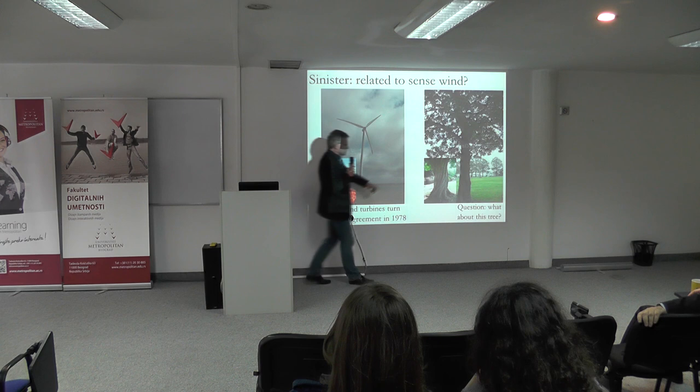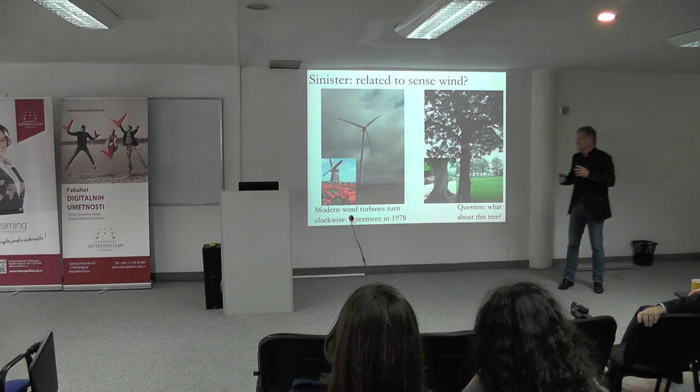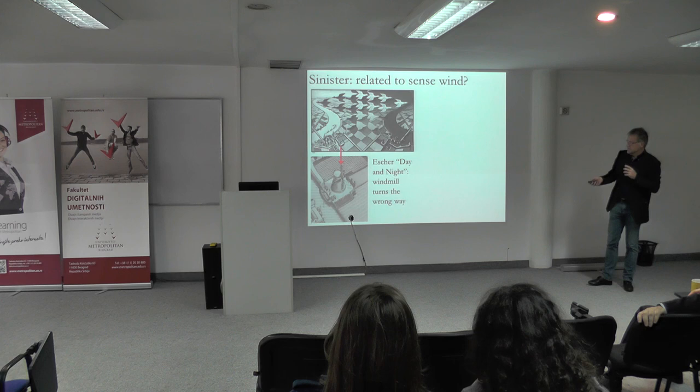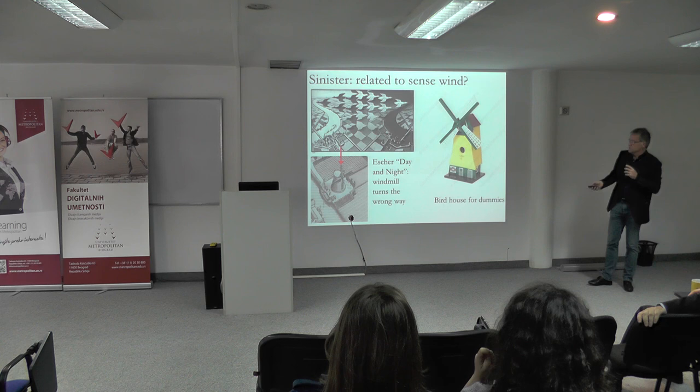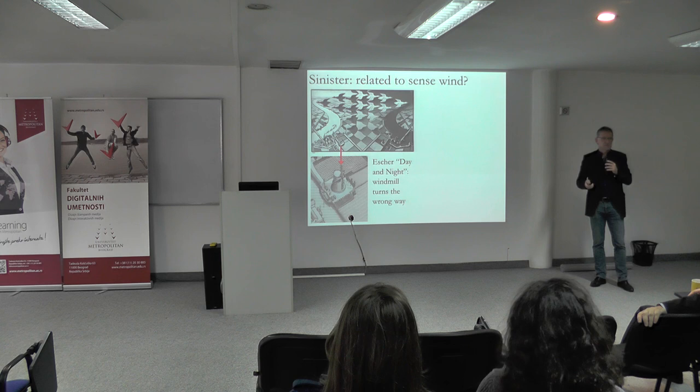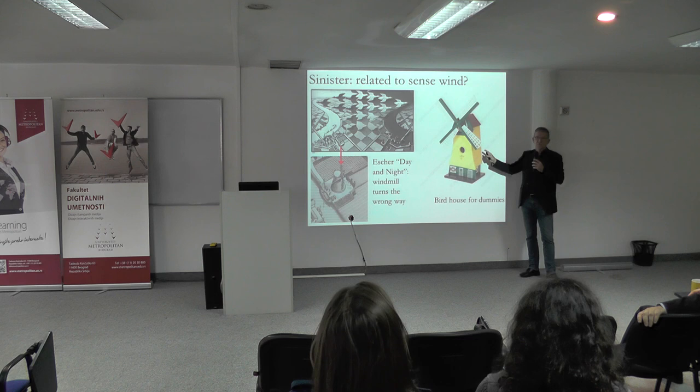There's another question — I just said that trees grow like this, but there are also trees that grow the other way. So what do you do then? These explanations — I don't know what they're worth. This is a drawing by Escher, Day and Night. And this windmill turns the wrong way. He had a little problem because he had to do the opposite of the other one, which turned correctly. So by using the mirror image, he constructed a wrong windmill — a windmill for dummies, because it turns the wrong way.